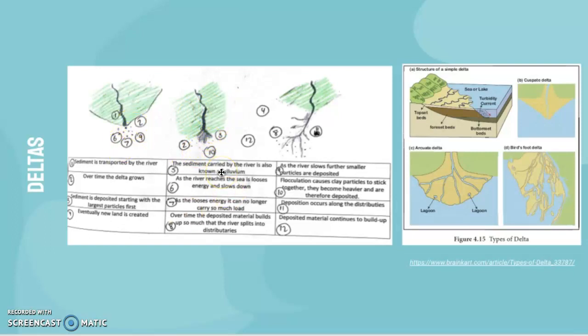As the river reaches the sea, it begins to lose energy and slows down. Because of this loss of energy, it has to deposit the material. That gets deposited relatively randomly, so distributaries start to form, which are little streams in the delta. There's also a term called flocculation, which is where clay particles stick together and become heavier and are therefore deposited.